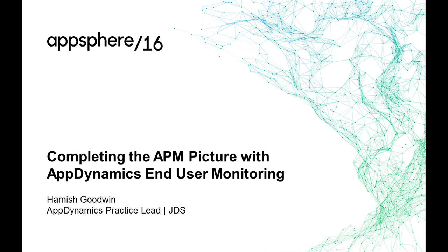Welcome, everyone. Mike Anand here. I'm director of product marketing for AppDynamics, looking after Business IQ. You guys heard a lot about that today. This session, however, I'm happy to introduce Hamish Goodwin. Hamish is going to talk about if you have APM, why you need to think about EUM and APM together. Hamish is from Australia and just won our Partner of the Year for Emerging Markets.